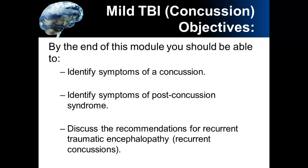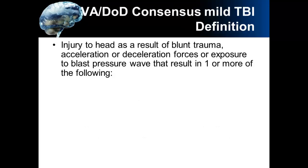Recurrent traumatic encephalopathy is a condition that occurs from recurrent concussions. Before we talk about the symptoms of concussion, I'd like to define mild traumatic brain injury or concussion based on the Department of Defense guidelines, which also includes some of the manifestations. Injury to the head as a result of blunt trauma, acceleration or deceleration forces, or exposure to a blast pressure wave that results in one or more of the following.